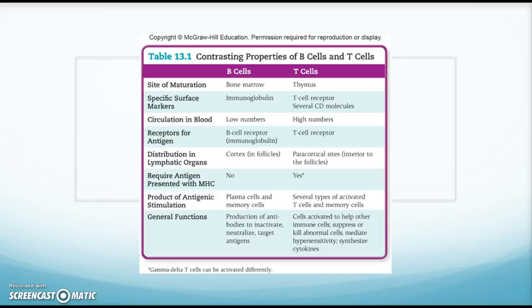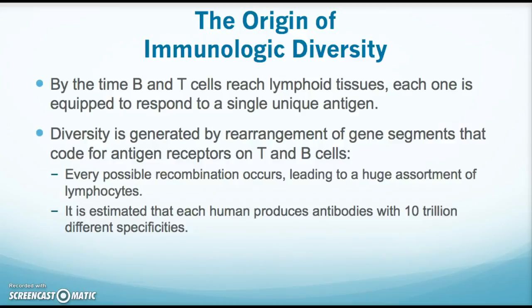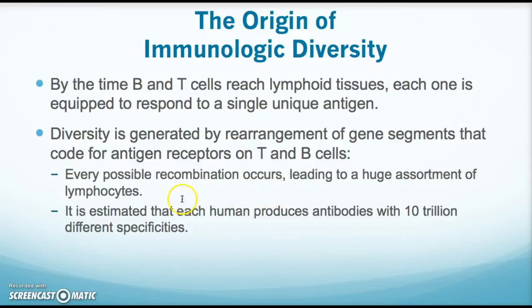How do we get the diversity that allows these cells to recognize any particular antigen? When B and T cells are maturing, by the time they reach lymphoid tissue, each cell has the ability to respond to a single unique antigen. This diversity is generated by rearrangement of gene segments on the antigen receptors. Huge amounts of gene segments can be rearranged to code for every possible antigen, so recombination occurs and we end up with a huge assortment of lymphocytes.